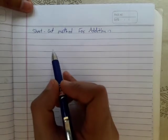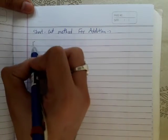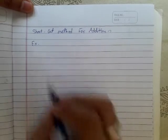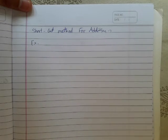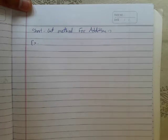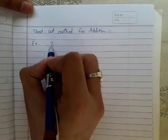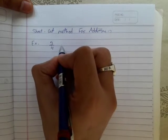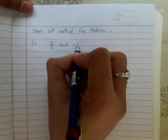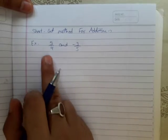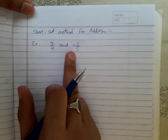There is a shortcut method for addition. Let's take one example: suppose we have to add 3/4 and -3/5. Here you can see that the numerators and denominators are different.